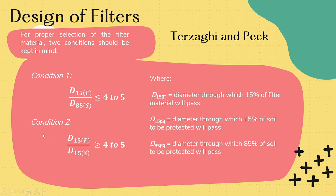For the second condition, the ratio of D15F to D15S should be greater than or equal to 4 to 5. D85S is the diameter through which 85% of the soil to be protected will pass. This is applicable to the first condition. And D15F and D15S are already mentioned.